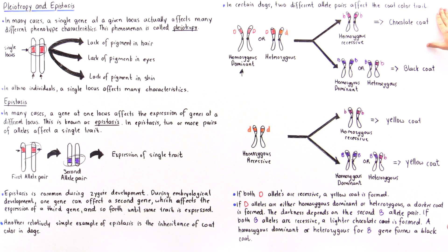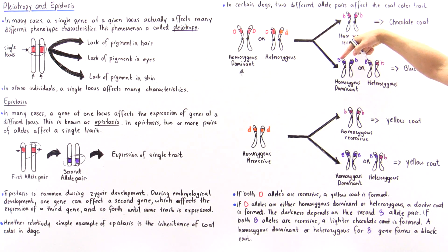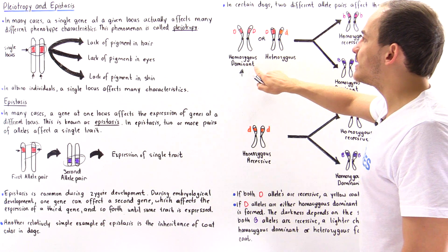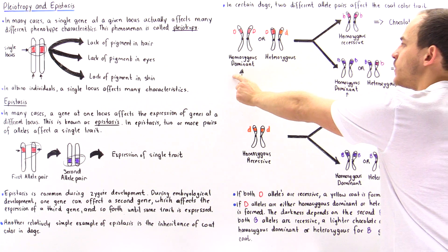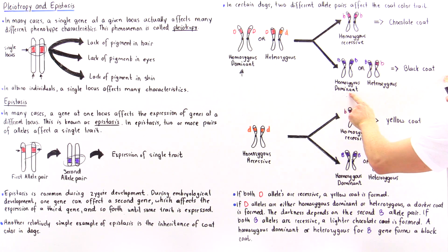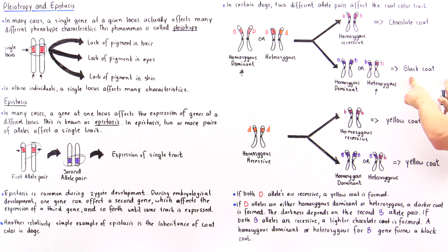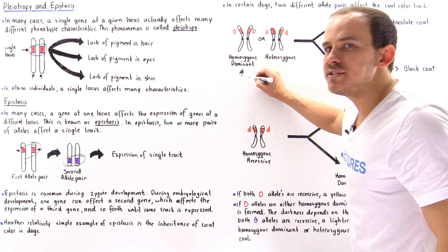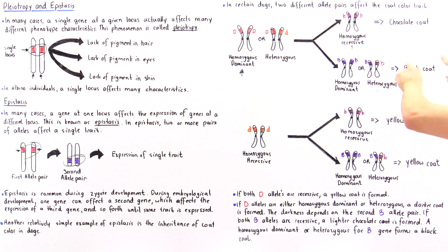Whether the coat is chocolate or black depends on the second gene. If we have homozygous dominant DD and homozygous dominant BB, we produce a black coat color. Likewise, if we have homozygous dominant DD and heterozygous for B (at least one dominant B), we still produce black. But if we have homozygous dominant DD and homozygous recessive for the B gene (lowercase bb), then we produce a lighter, brown or chocolate coat color.